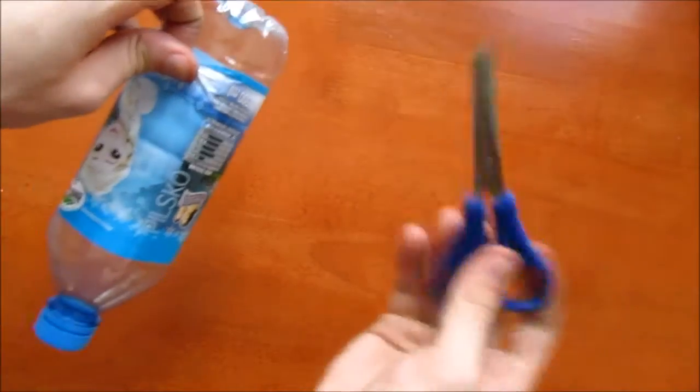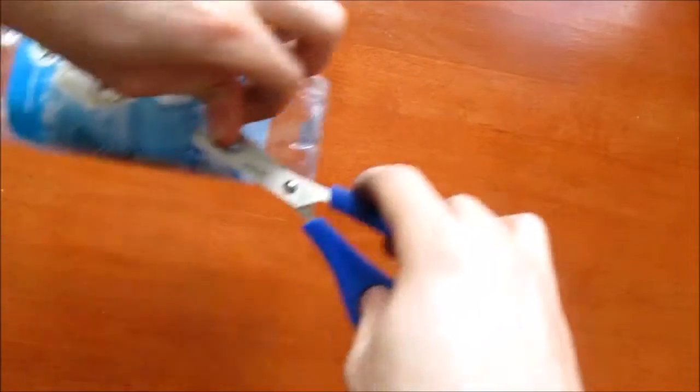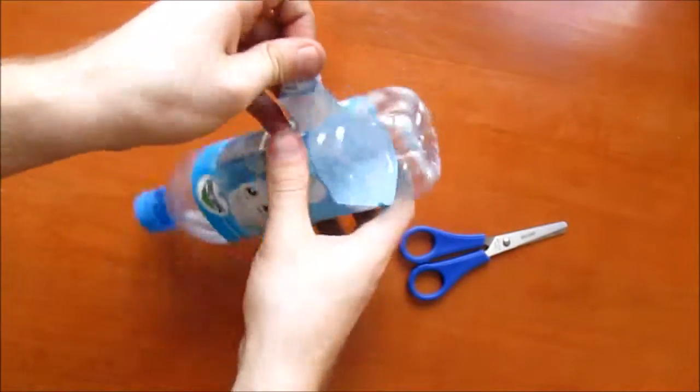Once the hole is drilled to the size of the valve, you're going to want to remove the wrapping on the side of the bottle and get it ready for putting the valve in place.